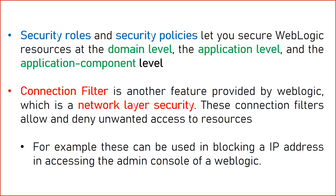Specifically in terms of applications, we have different kinds of security roles where we can create different kinds of users and groups, and define different policies for what groups of users have access to certain applications. But when we talk about the connection filter, you can filter access to your applications at the network level. For example, if you would like to block connections coming from a certain IP or IP range to access WebLogic server resources — the admin console, EM console, or maybe some deployed applications — that can be configured with the help of connection filters.